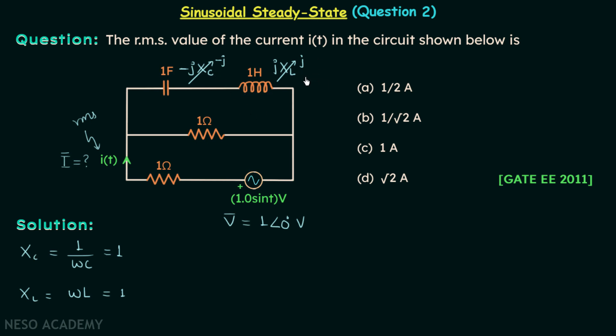Together they will offer the impedance equal to negative j plus j, which means 0 ohm.